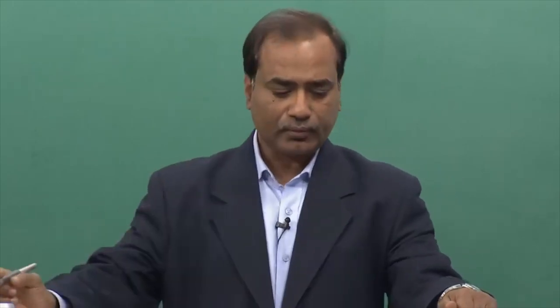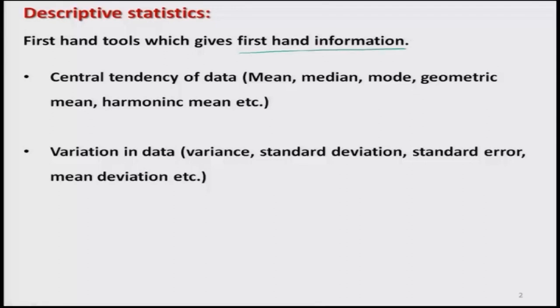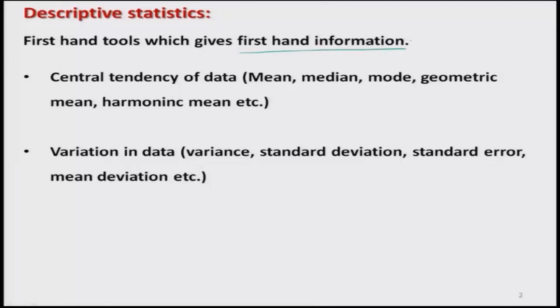Whenever we get data, the first-hand information is given by two types of tools: first are analytical tools and second are graphical tools. Under analytical tools there can be different characteristics, and here we are going to consider the central tendency of data and the variation in data.